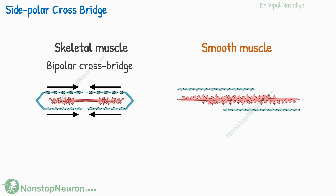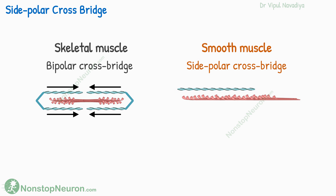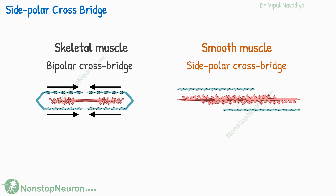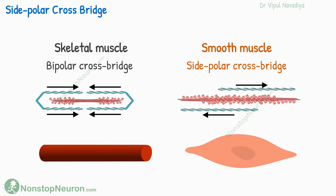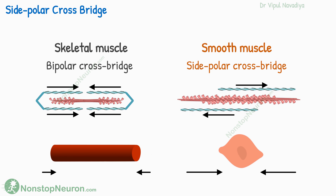On the other hand, smooth muscle has sidepolar crossbridges. Here you can think that myosin heads on one side of the filament are rotated 180 degrees to make the entire filament. So heads on one side of the filament pull actin in one direction, whereas those on the other side pull in the opposite direction. This sidepolar crossbridge mechanism allows greater shortening of the smooth muscle fiber as compared to skeletal muscle fiber.